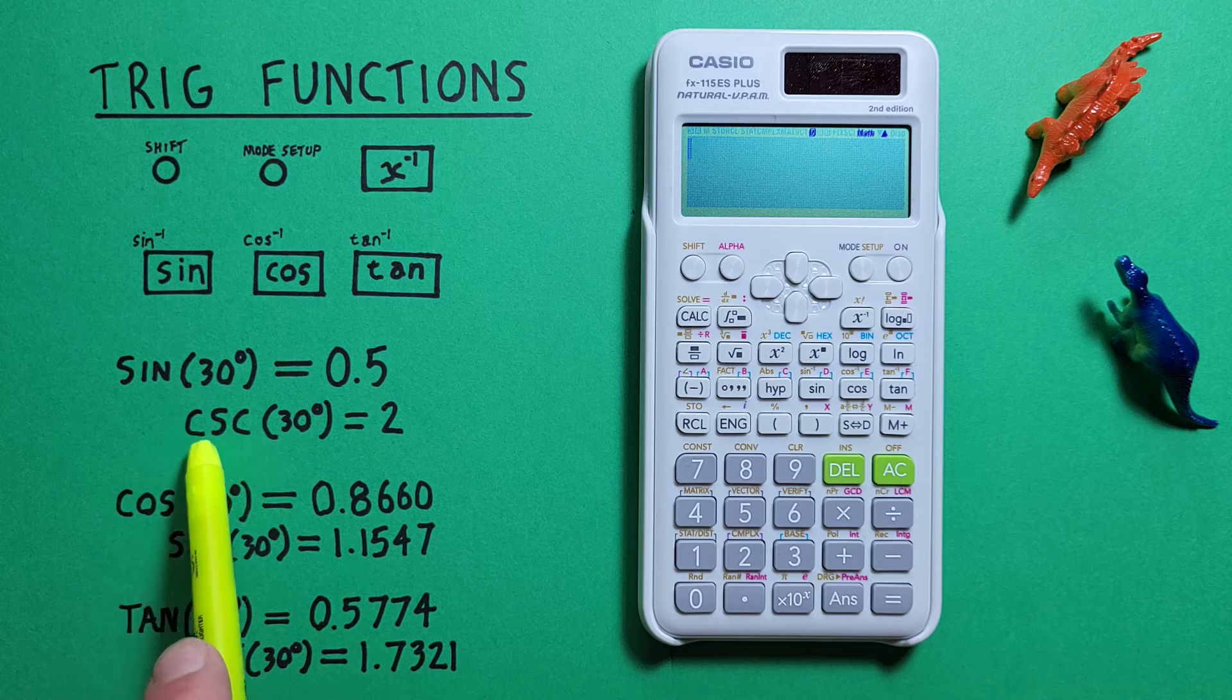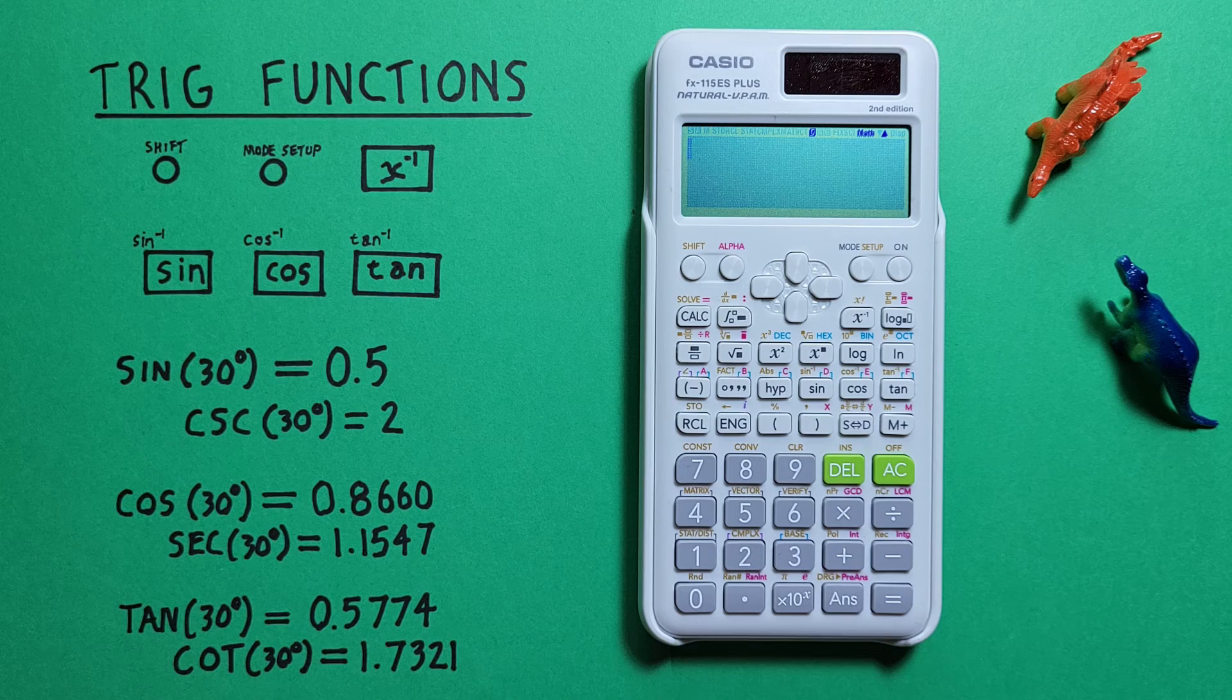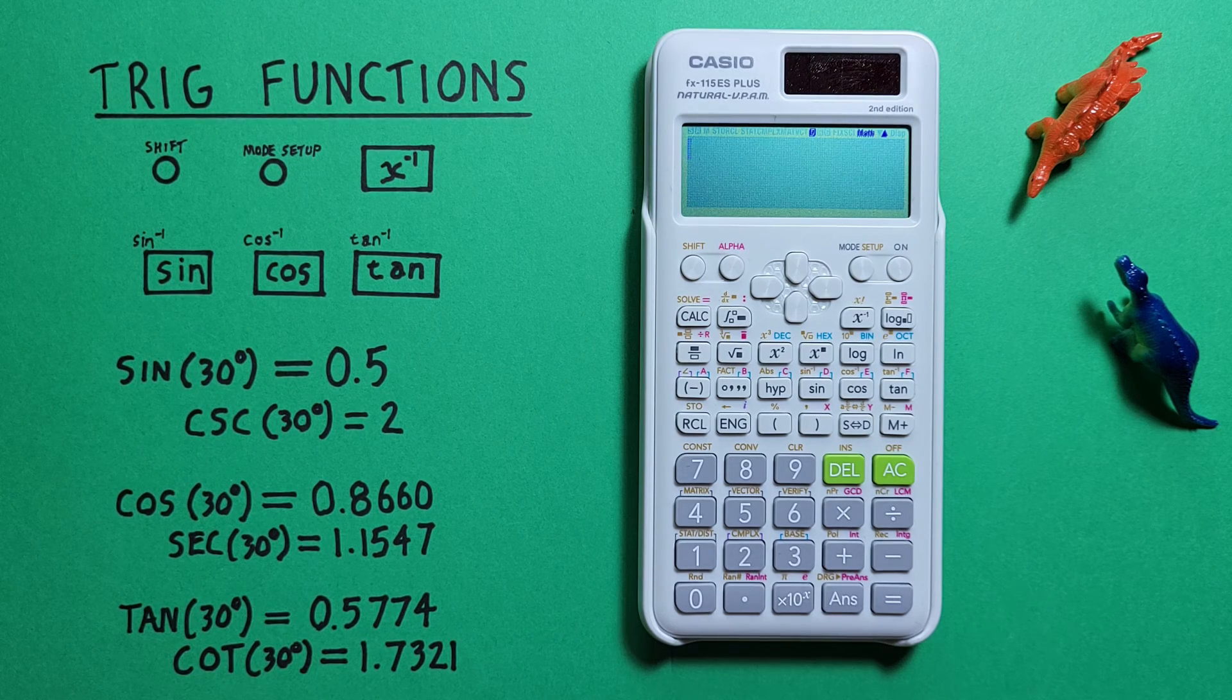We can also find cosecant, secant, and cotangent with this calculator. To do that we have to use the inverse of the corresponding function.